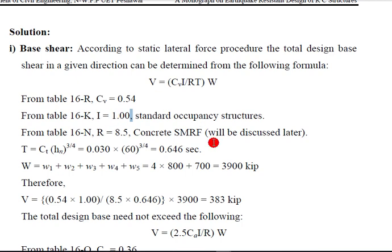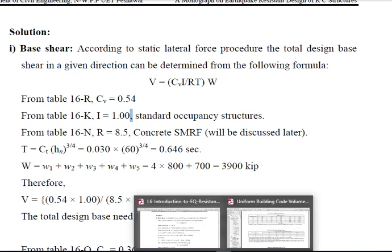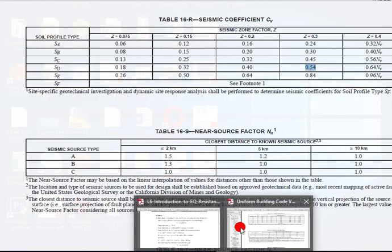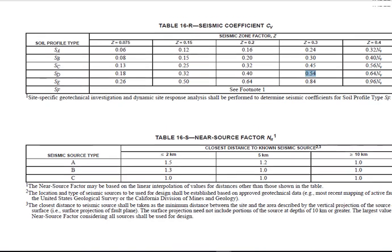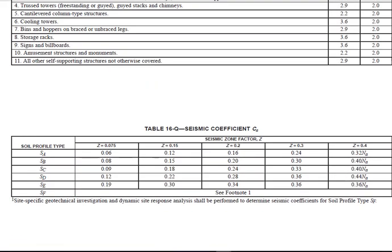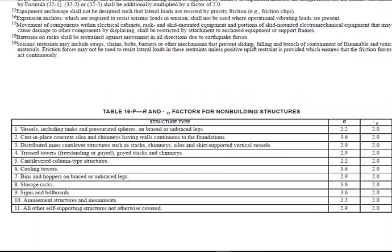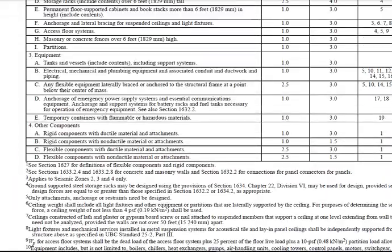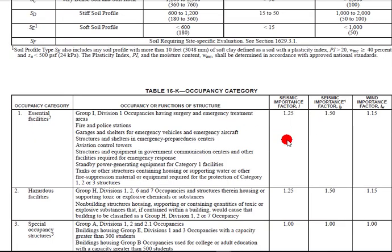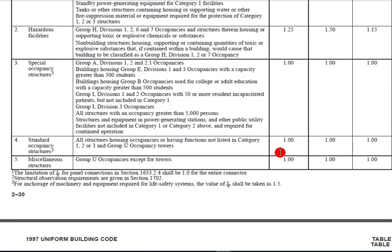So here I take it from the table: 0.54. Now the importance factor depends on the type of the structure. If it is a hospital, we take 1.25. You can take the importance value from the table. Here I can show you, this is the importance factor: for essential facility we take 1.25.